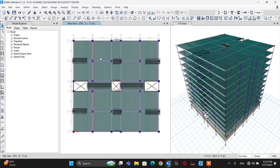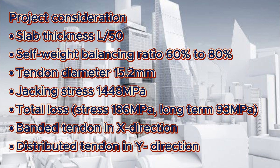Before starting today's tutorial, let me cover some project considerations. For slab thickness per Eurocode standard, use L divided by 50. The maximum span in our case is 8 meters, so 8000 divided by 50 gives an initial assumption of 160 mm. We'll use 200 mm slab thickness for this post-tension slab design. The self-weight balancing ratio should be 60% to 80%.